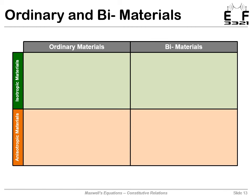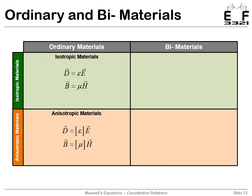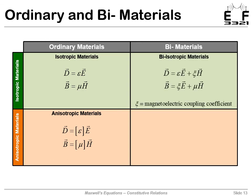We can classify materials as either ordinary or bi-isotropic and bi-anisotropic, forming a nice quad chart. An ordinary material is an isotropic medium with our two simple constitutive relations — that's what we study in this class. If those materials are anisotropic, then the permittivity and permeability become tensors, written with square brackets. Beyond that, there are cases where applying an electric field directly induces a magnetic field and vice versa, requiring us to modify our constitutive relations.